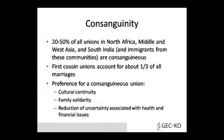Twenty to fifty percent of all unions in North Africa, Middle and West Asia, South India, and immigrant communities from these regions are consanguineous. First cousin union accounts for approximately one third of all marriages in these populations.